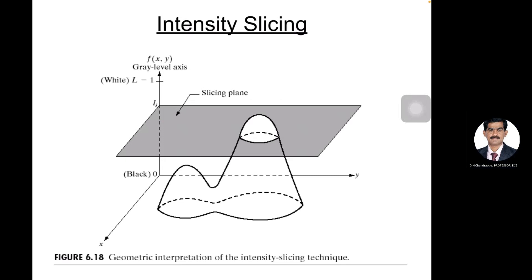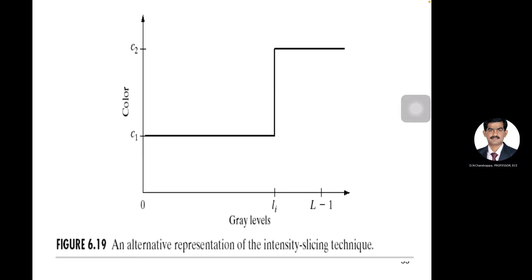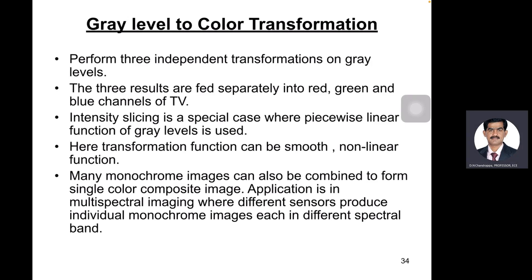Here the representation of intensity slice technique and gray level to color transformations. How are we going to transform the colors? We can take f of x comma y, we can pass it into the red transformation, gray transformations, and blue transformations, which will become f of r(x,y), f of g, and f of b. This is what we call a functional block diagram for pseudo color image processing.